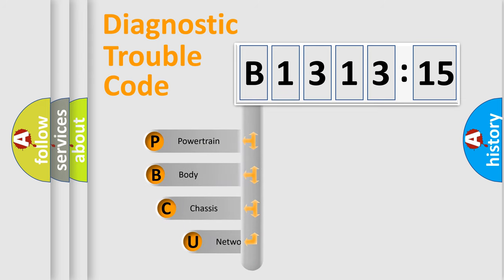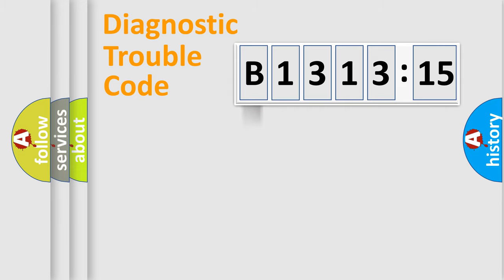First, let's look at the history of diagnostic fault code composition according to the OBD2 protocol, which is unified for all automakers since 2000. We divide the electric system of automobile into four basic units: Powertrain, Body, Chassis, and Network.